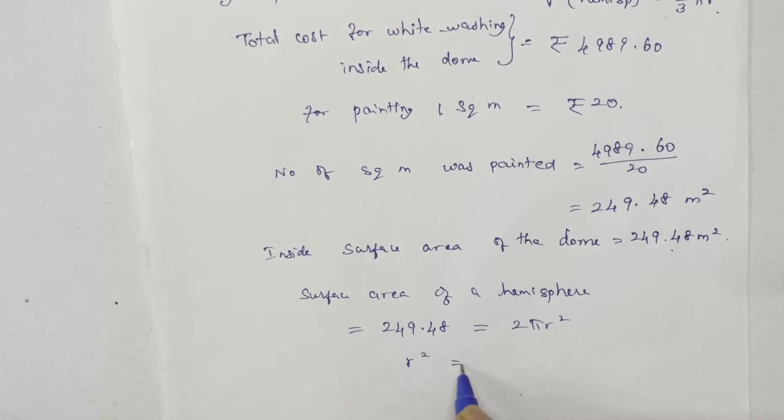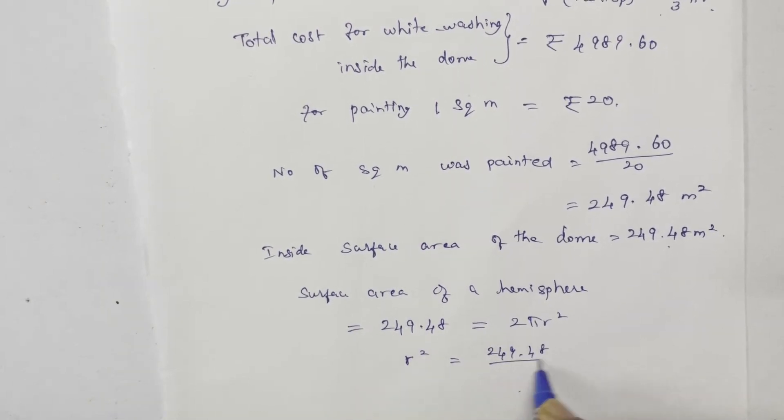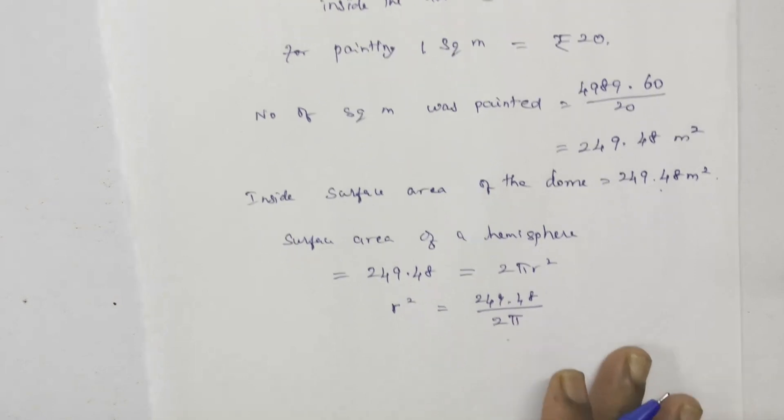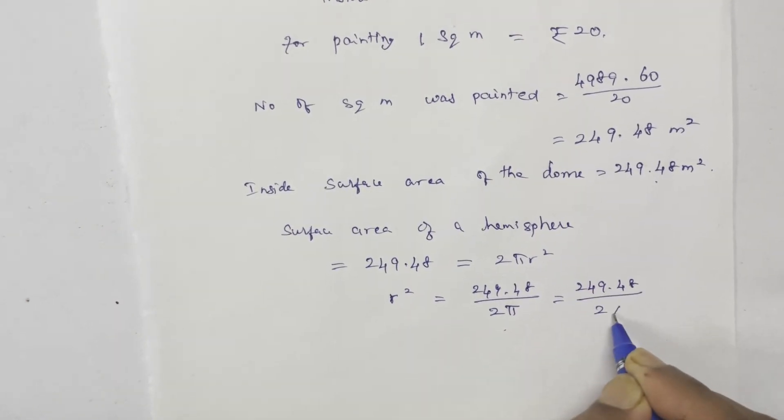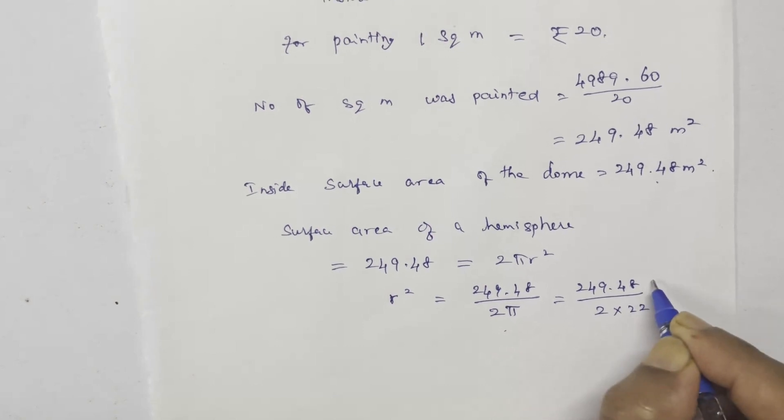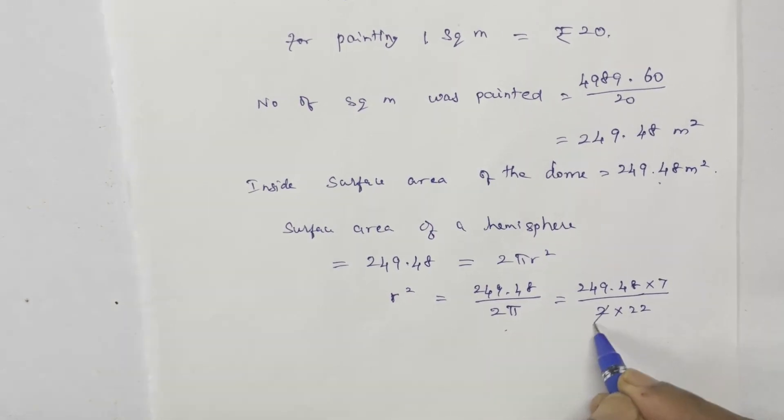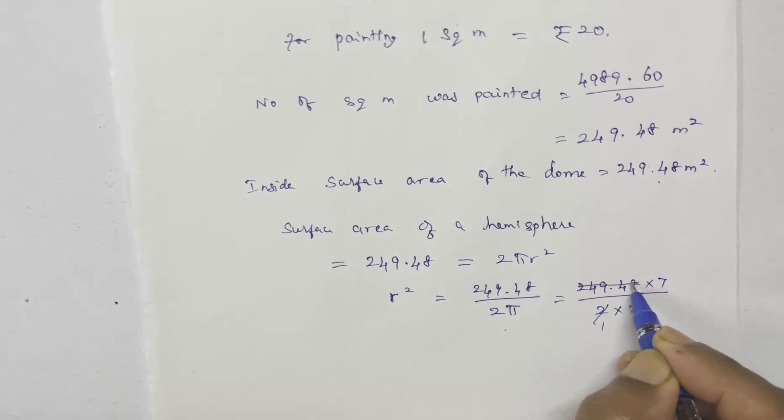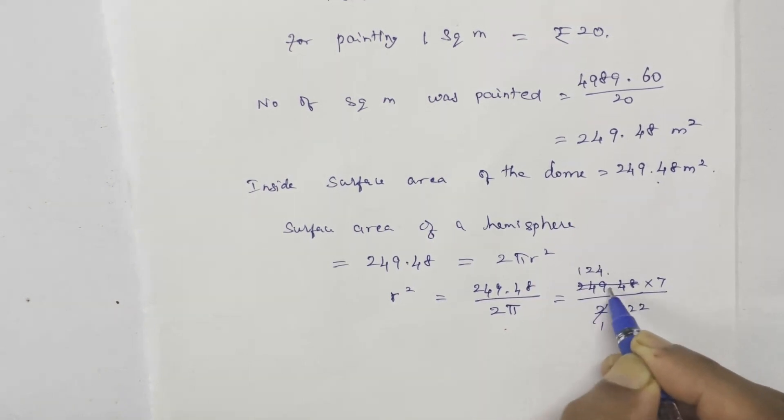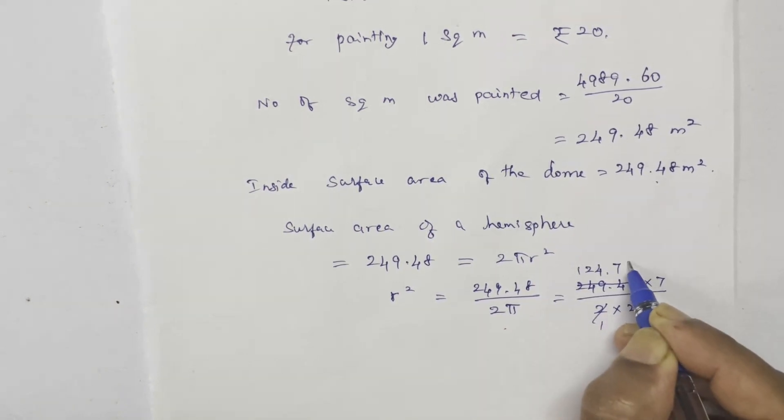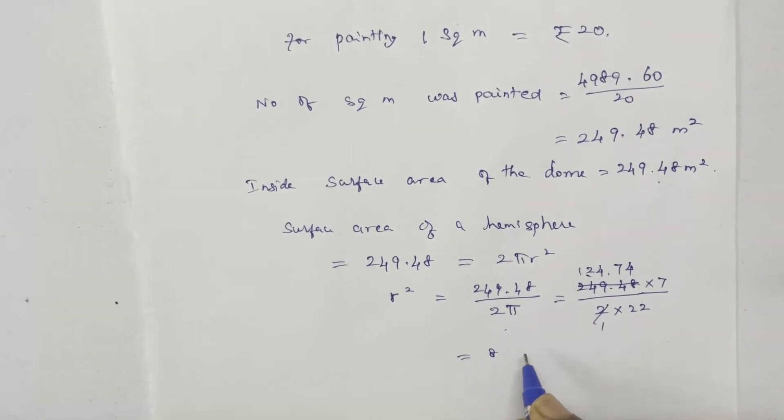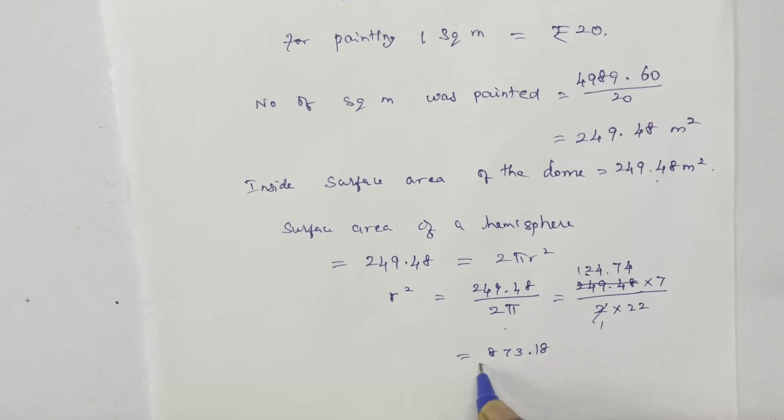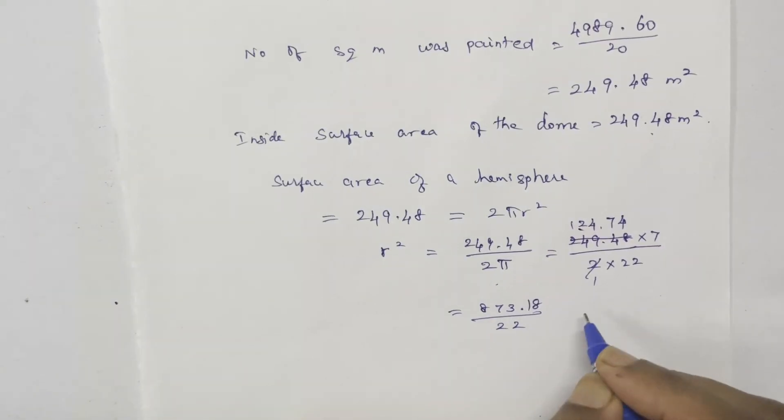To isolate r squared, r squared equals 249.48 divided by 2 pi, which is 249.48 divided by 2 into 22 by 7. Simplifying the calculation with cancellations and multiplying the values.